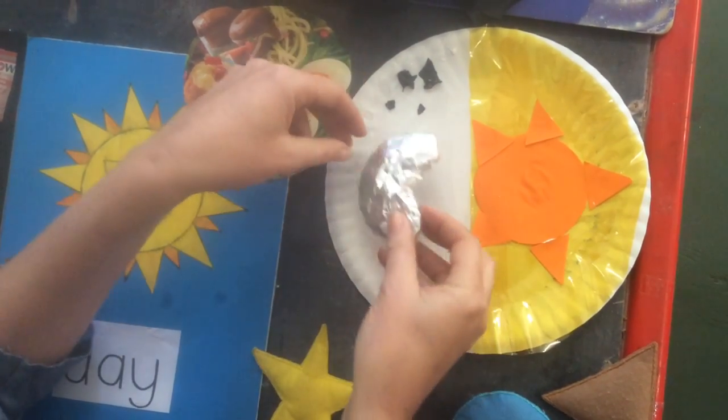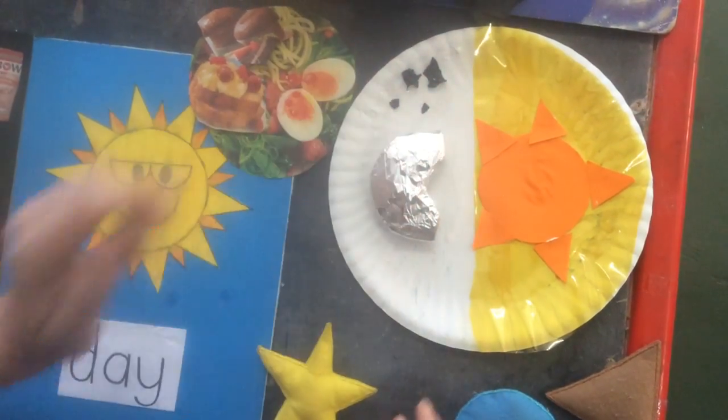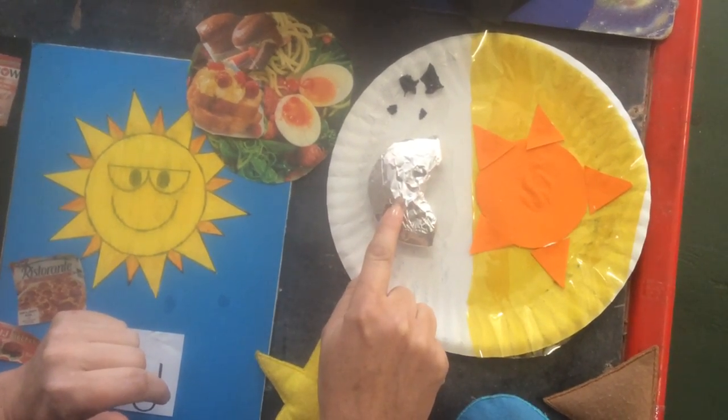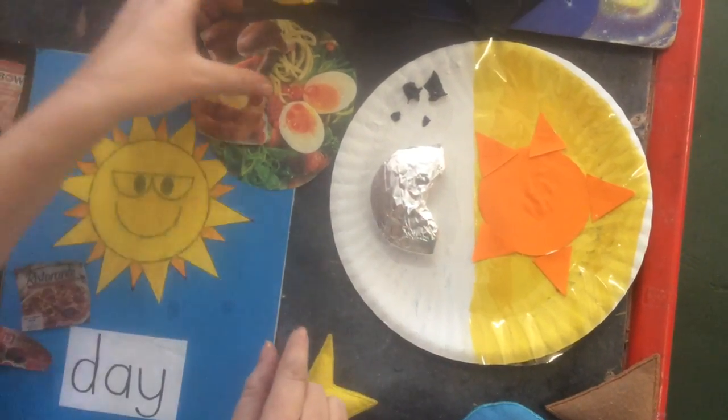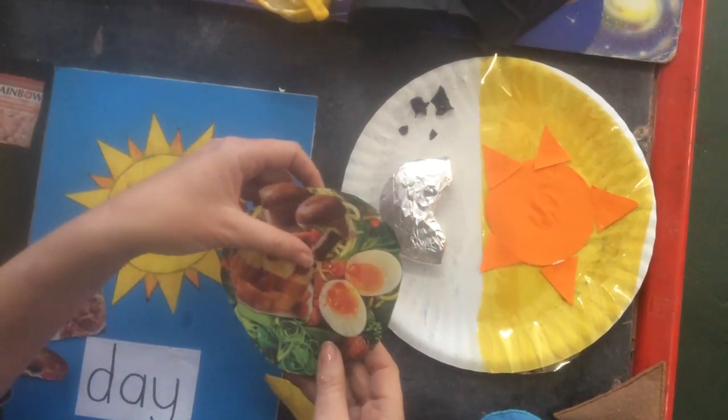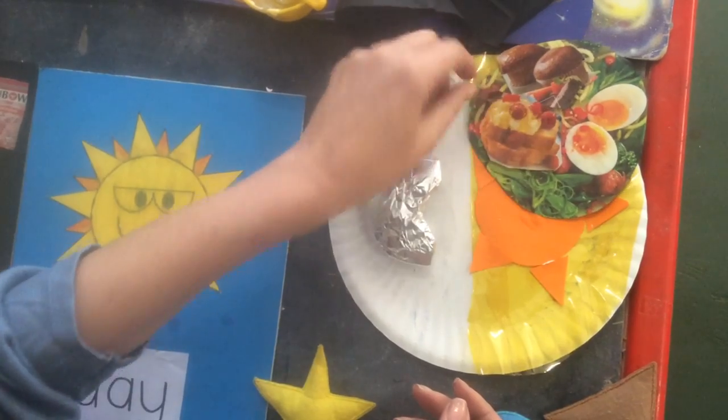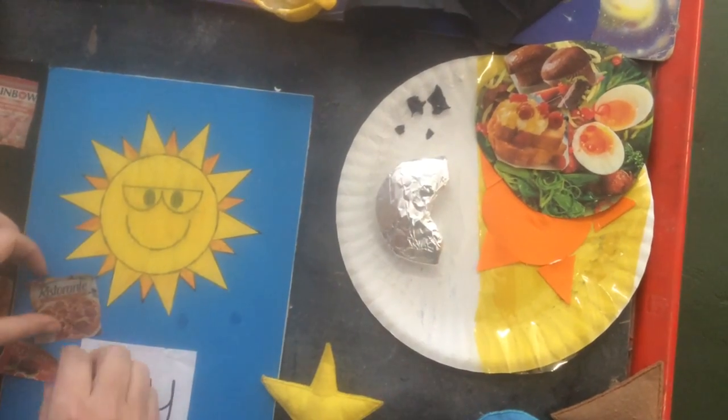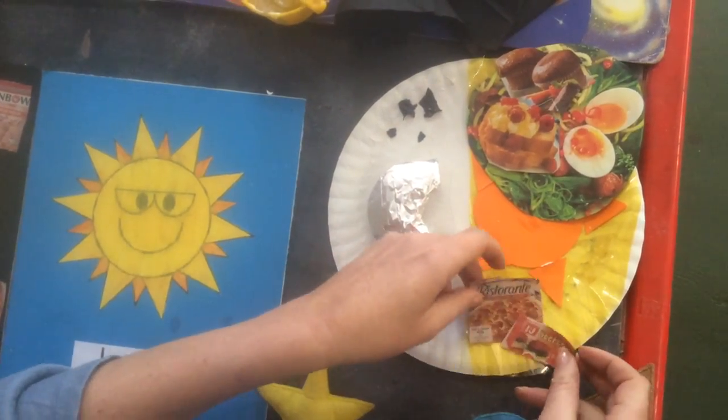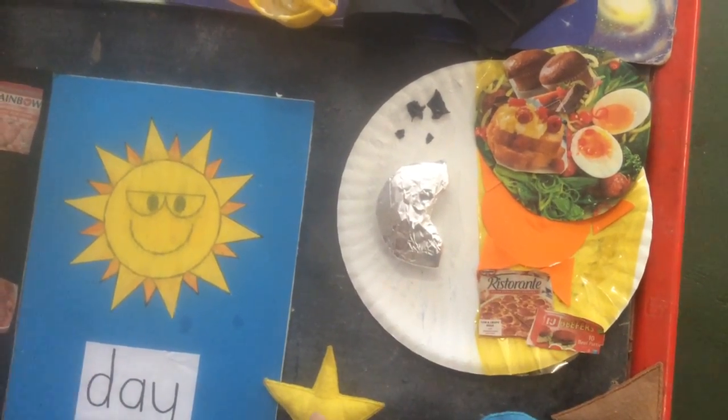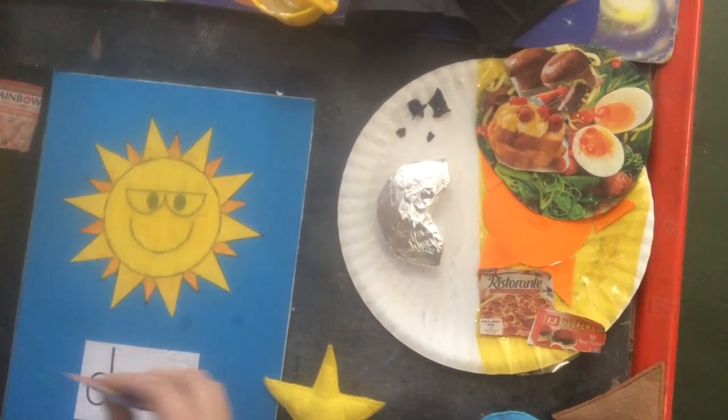There's my moon that I'm going to put on that side, so I've got a sun in the day and a moon at night. And then we're going to put our food that we eat in the day. Breakfast time we have that food, that kind of food, and then at lunch time we have burgers or things or sandwiches at lunch time.